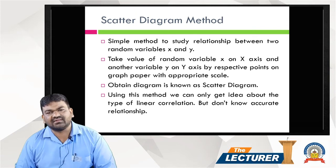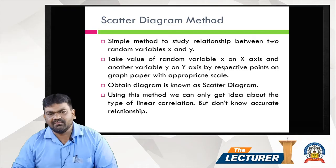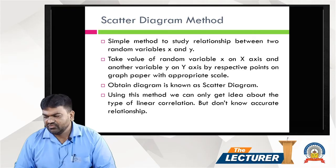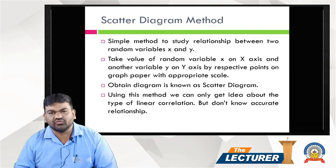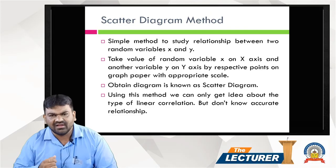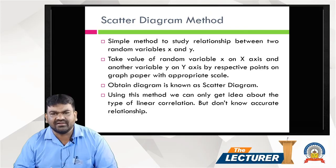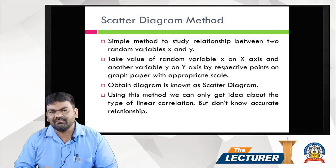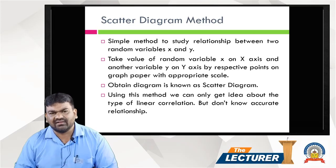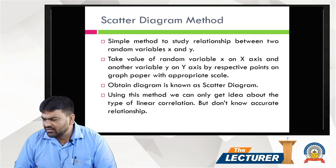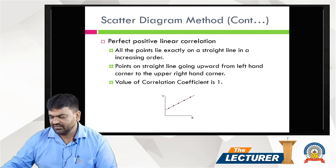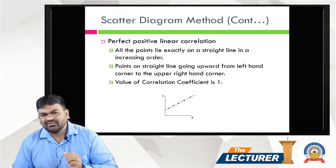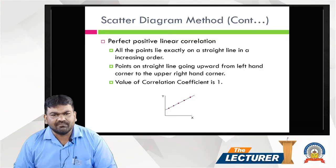The diagram obtained is known as a scatter diagram. Using this method, we can only get an idea about the type of linear correlation — whether it is positive, negative, no correlation, partial positive, or partial negative. We cannot get an accurate numerical value. These are the drawbacks of this method. In the scatter diagram method, there are a total of five types of correlation.